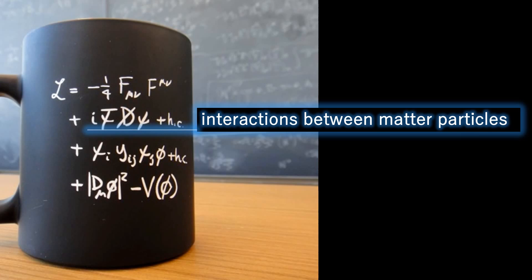D slash is the so-called covariant derivative, featuring all the interaction particles except the Higgs, but this time without self-interactions. The beauty of this term is that it contains the description of the electromagnetic, weak, and strong interactions.